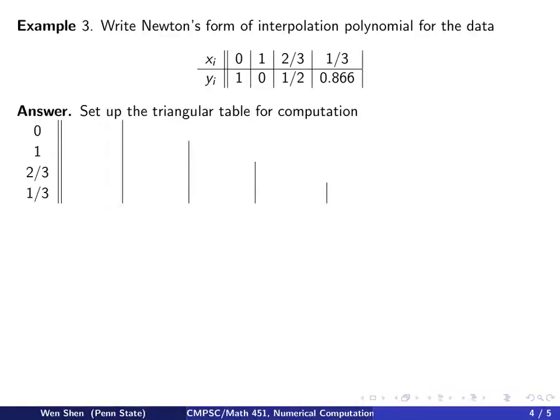We follow the procedure of computing the divided difference, and we set up this triangular table for our computation. First we list the data points of x, so x0, x1, x2, x3, as the additional column outside. Then we initiate the recursive computation by filling in the first column, and this will be just the data for yi, which will be these numbers 1, 0, 0.5 and 0.866, which I filled up here.